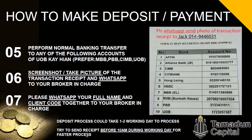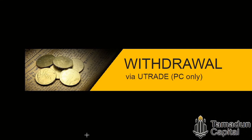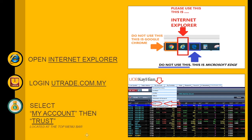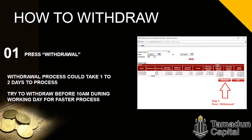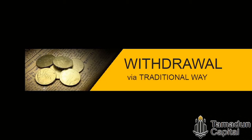For withdrawals, open Internet Explorer and log in to utrade.com.my. Select My Account, then Trust. Set the starting date to a few days ago and the ending date to today, then press Go. Click on Withdraw. This withdrawal process takes one to two working days, so try to make the withdrawal before 10am on working days to speed up the process.